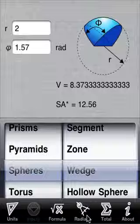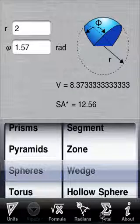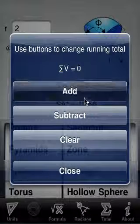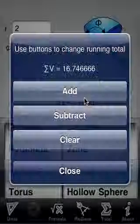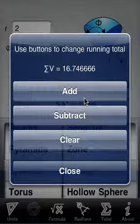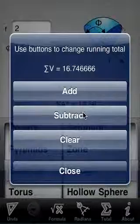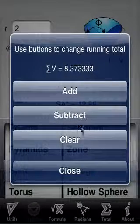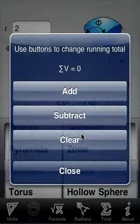To add the current volume result to the running total, tap the sigma icon. Press add. Note that multiple shapes can be added and subtracted from this running total. To subtract the volume from the total, press subtract. To clear the running total, press clear. To exit, press close.